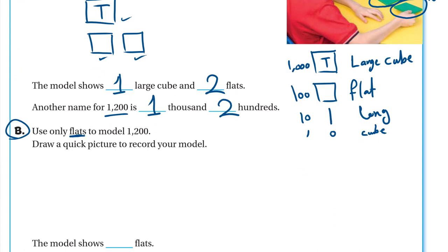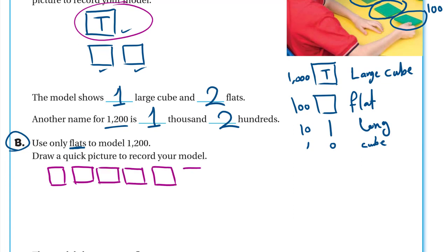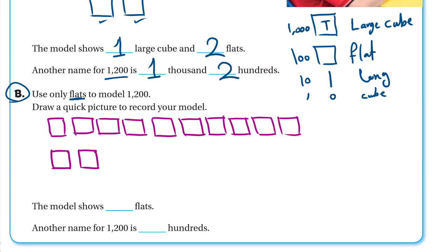For part B, use only flats to model 1200. We said 10 flats make one large cube, so instead of the large cube we draw 10 flats: 1, 2, 3, 4, 5, 6, 7, 8, 9, 10. Those represent the 1000, then we add our 2 flats for 200. In total that's 12 flats, so another name for 1200 is 12 hundreds.